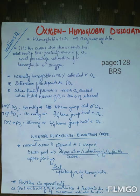On page number 128 of PRS Physiology, you will see that there is a graph. On the x-axis there is the partial pressure of oxygen, and on the y-axis there is hemoglobin saturation. The oxygen-hemoglobin dissociation curve demonstrates the relationship between the partial pressure of oxygen and the percentage saturation of hemoglobin with oxygen.